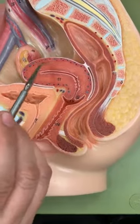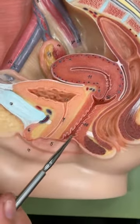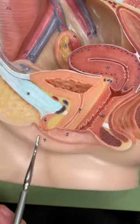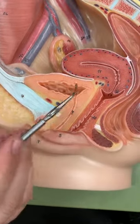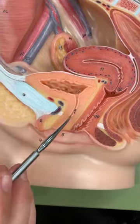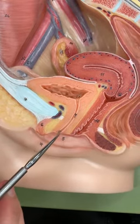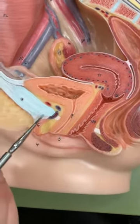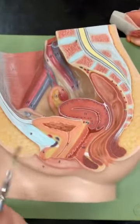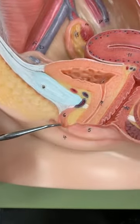You have your uterus which is here. This right here is your vagina. You have your labia minora and your labia majora. Your urinary bladder — and coming from the urinary bladder is the urethra. Your pubic symphysis and your mons pubis. The erectile tissue in the female is number six, which is the clitoris.